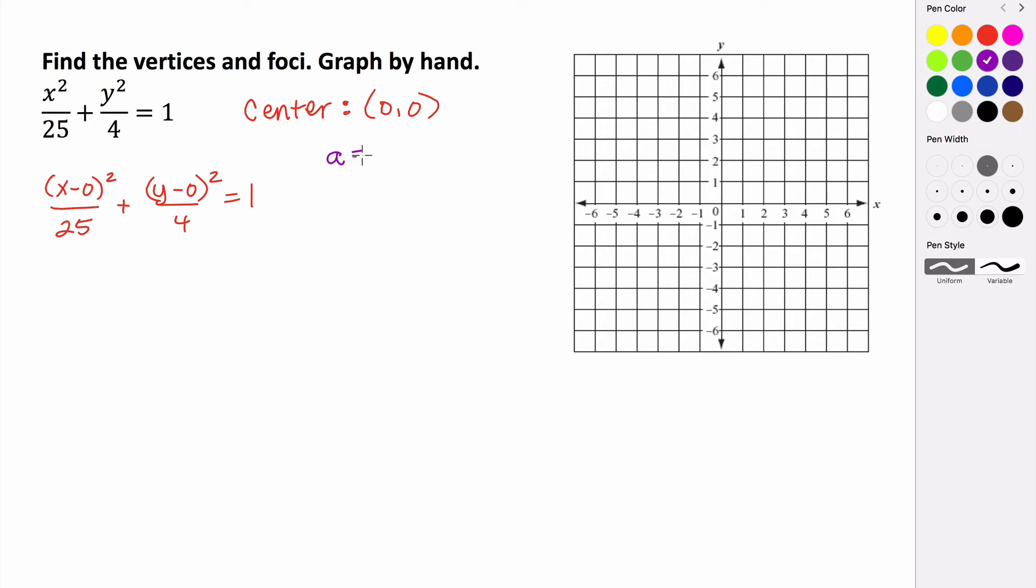So what is a? Remember, a is always the larger of these two values. So this right here, 25, this is just a squared. So if a squared is 25, that means a is five. B is just the value, the square root of this value here, because this is b squared. So b is two.